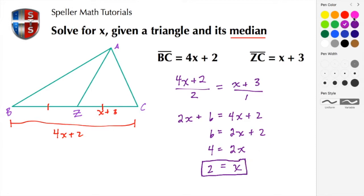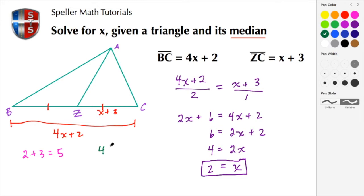Let's verify this solution. Substituting X equals 2 back into ZC's expression gives us 2 plus 3, which equals 5. Since BZ should also equal 5, let's confirm by substituting into the BZ expression.